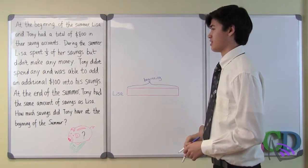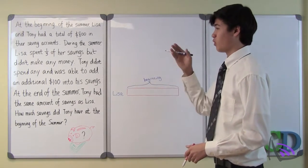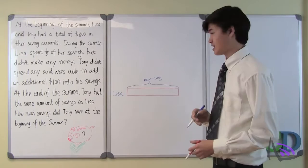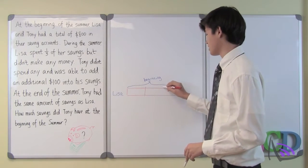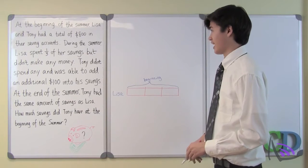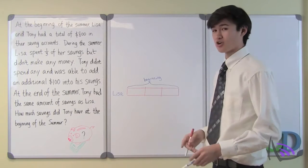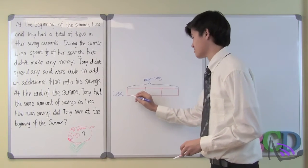Next, the question tells us that Lisa spent one-third of her savings during the summer, so let's cut this bar up into three equal parts. Since during the summer she spent one-third of her savings, then by the end of the summer she would only have two-thirds left.